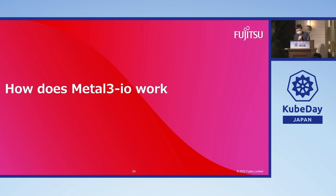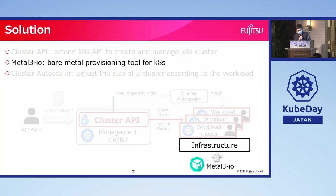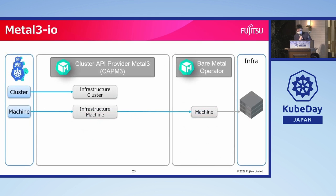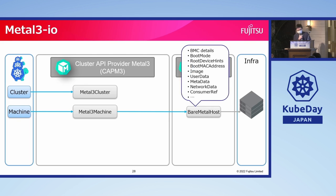Metal3.io is a bare metal provisioning tool for Kubernetes and also an infrastructure provider for Cluster API. There are two main components in Metal3: the Cluster API Provider Metal3, or CAPM3, and the Bare Metal Operator. CAPM3 is the infrastructure provider, and the Bare Metal Operator is the bare metal provisioning tool. The CRDs defined by them are the Metal3Cluster, the Metal3Machine, and the BareMetalHost. A BareMetalHost object represents a bare metal server and contains information such as BMC details, boot mode, OS image, user data, and so on. The Bare Metal Operator uses this data to access the bare metal servers, control the power, and do the provisioning work.